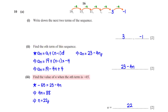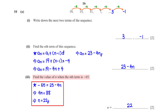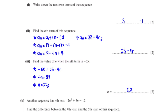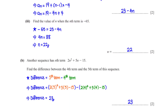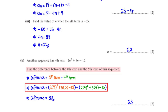Find the value of n when the nth term is negative 65. Plugging into 23 minus 4n = negative 65 and solving gives n = 22. For another sequence with nth term 2n² + 5n minus 15, find the difference between the 4th and 5th terms. Substituting n = 5 and n = 4, then subtracting, we get 23.